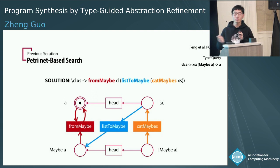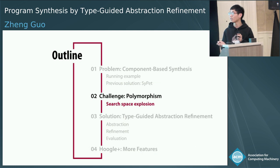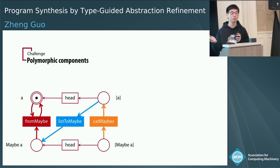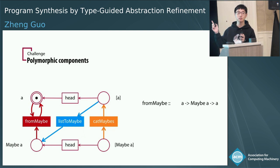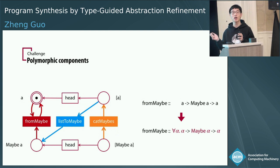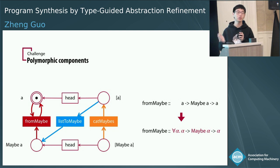It seems this previous work already solves the problem, but actually it doesn't, because we have polymorphism. Our components can be polymorphic. I have cheated when building this Petri Net, because I only added one instance of fromMaybe in it. Actually, fromMaybe is a polymorphic function — the type variable alpha in it can be substituted with any type — but I only added this one instance. We have to add all the possible instantiations into the Petri Net; otherwise, our search will be incomplete.